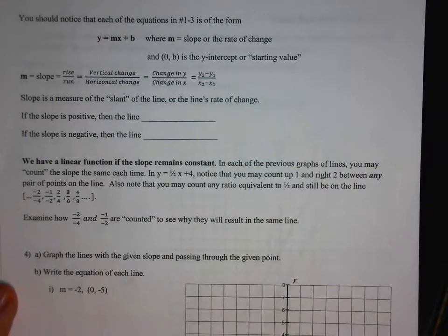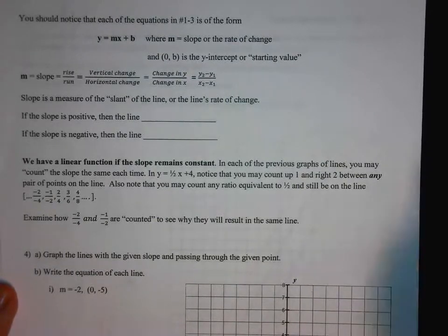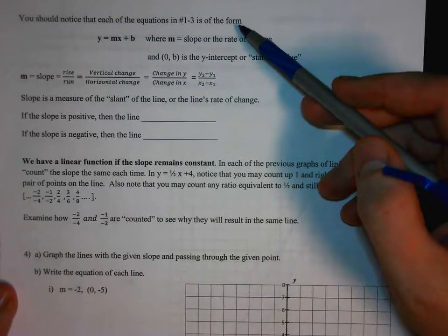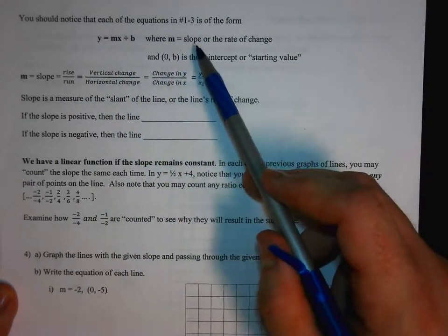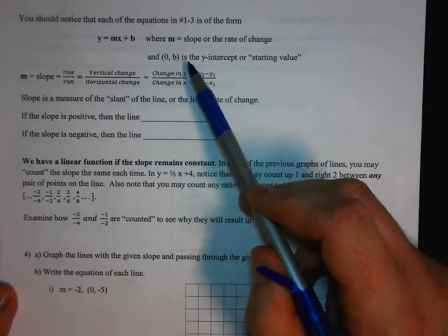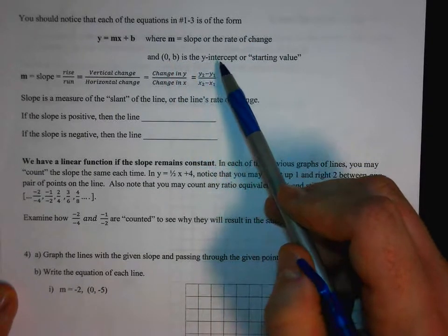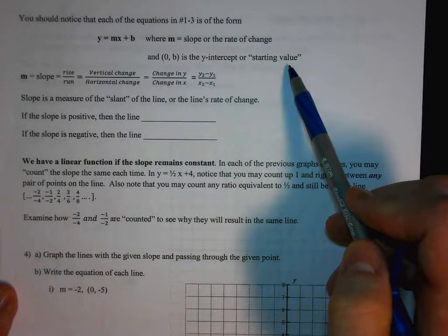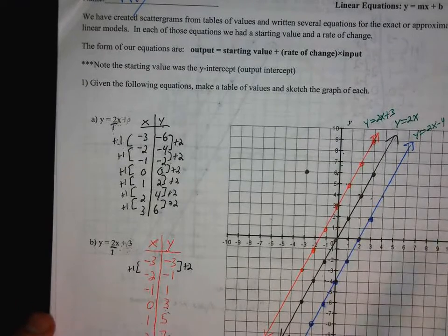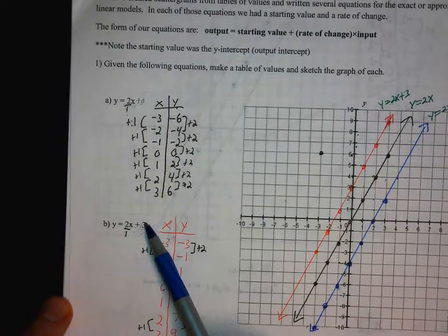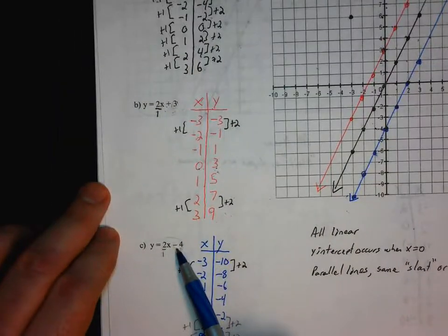In the last video, we were looking at graphing equations in y equals mx plus b form. Each of those equations was of that form, where m was the slope or the rate of change, and b is the y-intercept or the starting value. The examples we had were y equals 2x, y equals 2x plus 3, and y equals 2x minus 4.